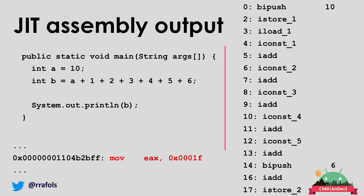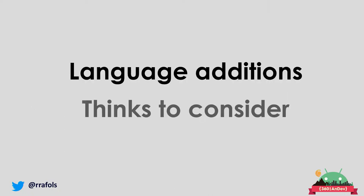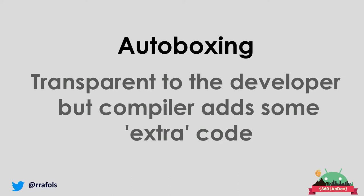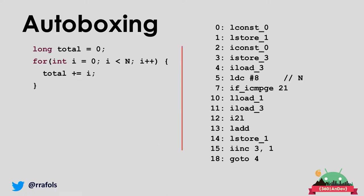So all the optimizations are done by the virtual machine. Language additions are something we need to consider and use wisely. For example, autoboxing is transparent and nice — it saves us a lot of boilerplate code.